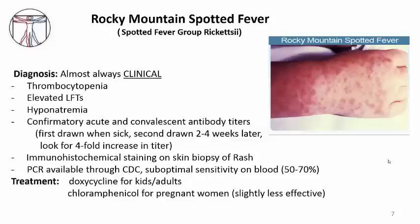Diagnosis is often confirmed by acute and convalescent antibody titers: the first drawn when sick, and a second drawn two to four weeks later, looking for a four-fold increase in titer. A single time point antibody test is suggestive but not confirmatory. Other tests include immunohistochemical staining of a skin biopsy, and a PCR test available through the CDC, which has high specificity but suboptimal sensitivity on blood, since the organism lives in endothelial cells and has limited nucleic acid in the bloodstream.